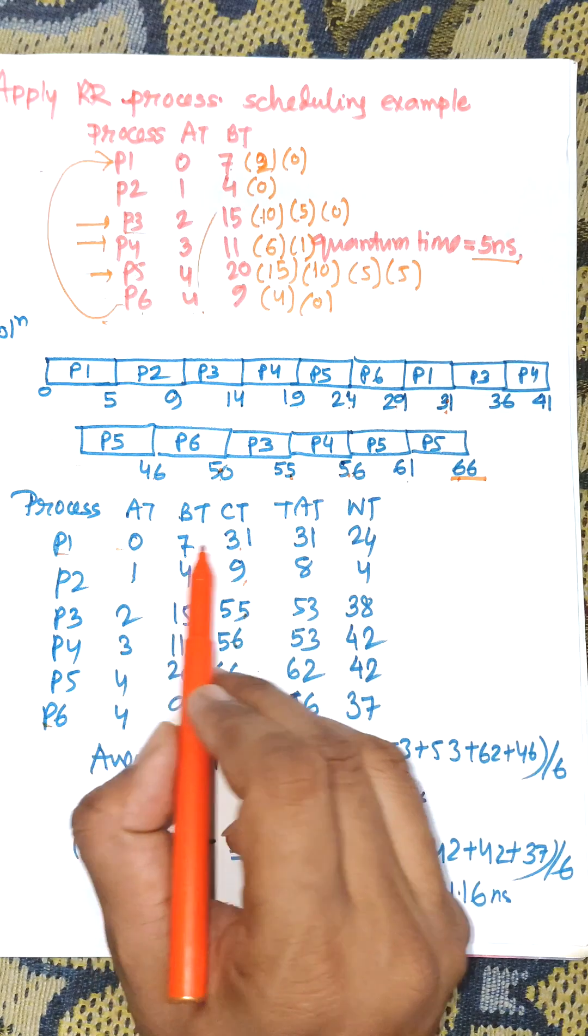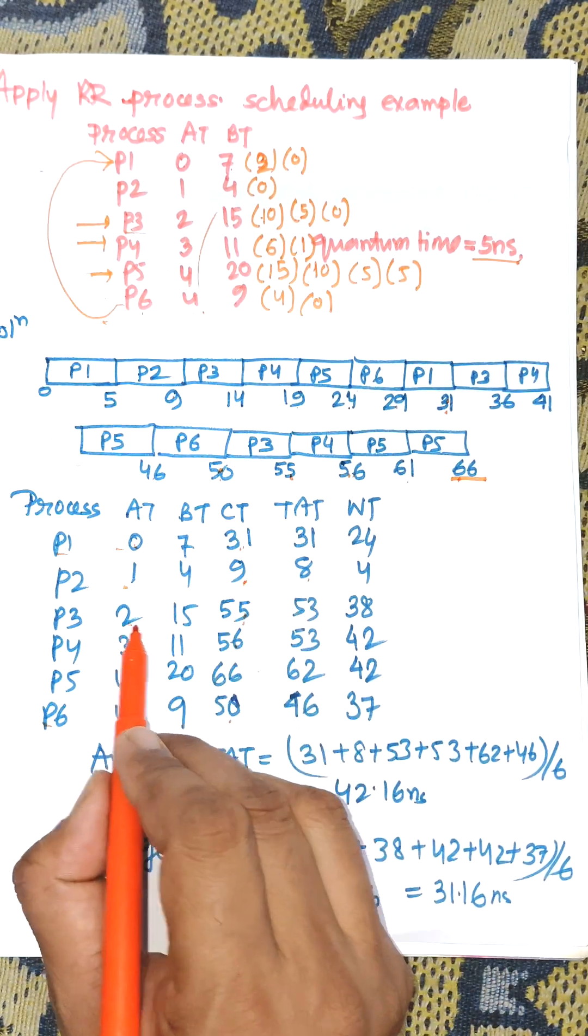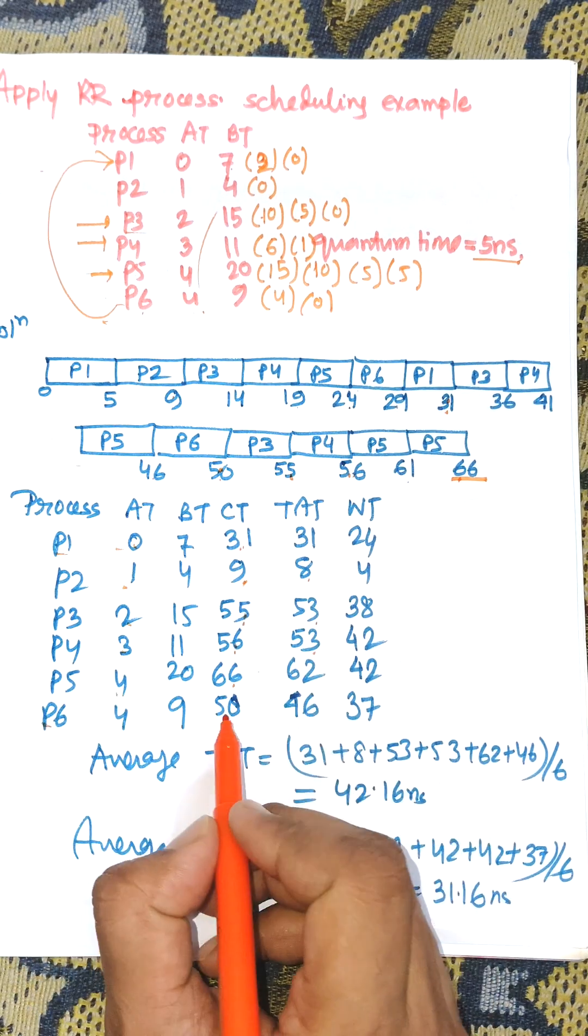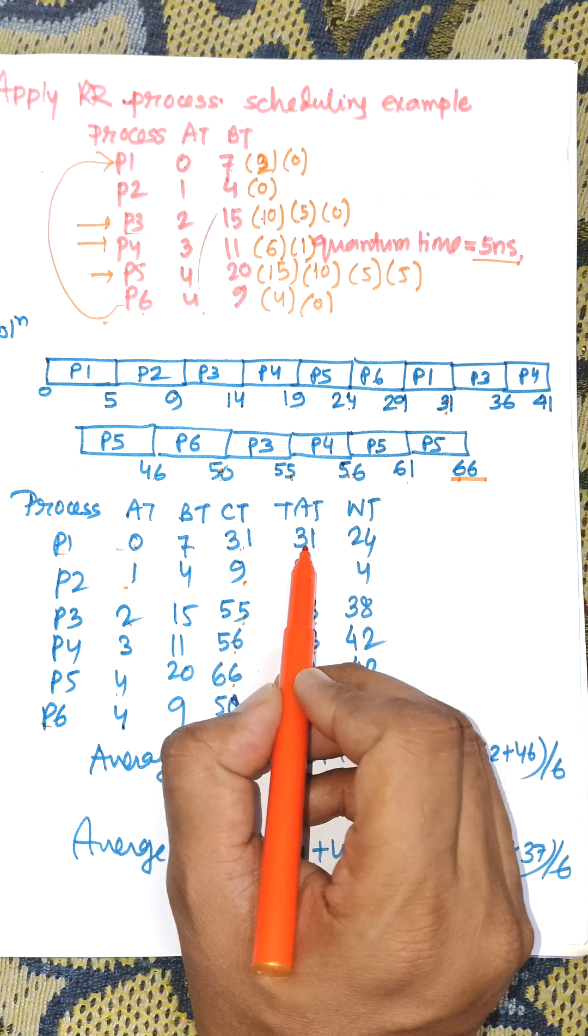Now, turnaround time is completion time minus arrival time: 31 minus 0 equals 31, 9 minus 1 equals 8, 55 minus 2 equals 53, 56 minus 3 equals 53, 66 minus 4 equals 62, 50 minus 4 equals 46.